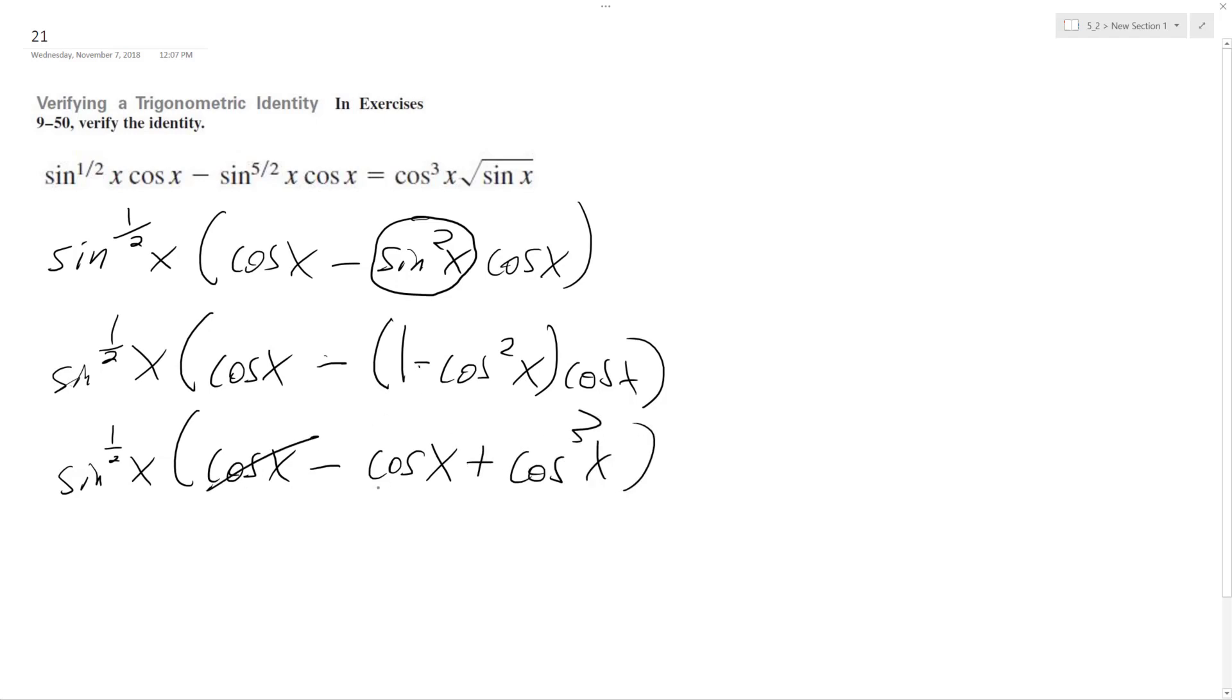So these two cancel out, and I multiply, distribute this through. These are already canceled out, so it's just multiplying that, and that's how I end up with sine raised to the half is the same thing as the square root, so it's just cosine cubed x times the square root of sine of x.